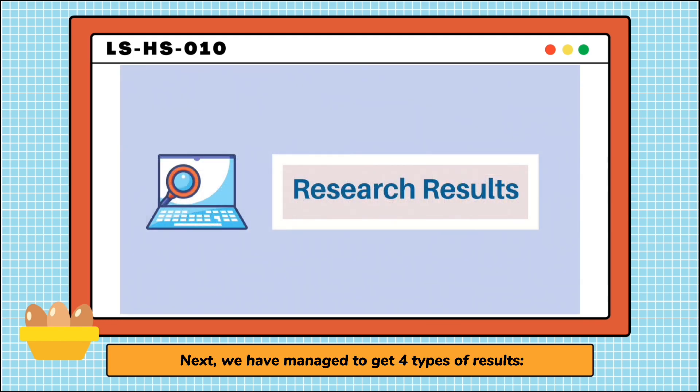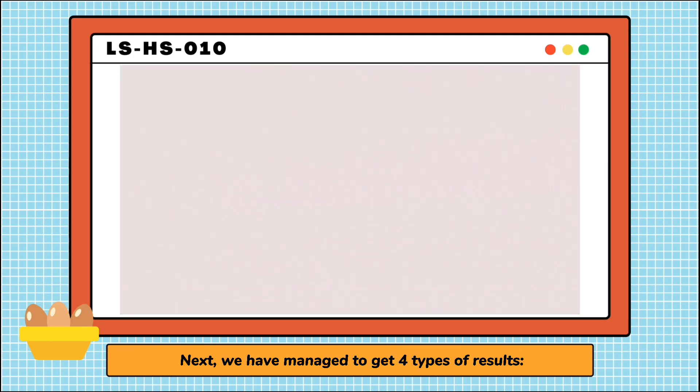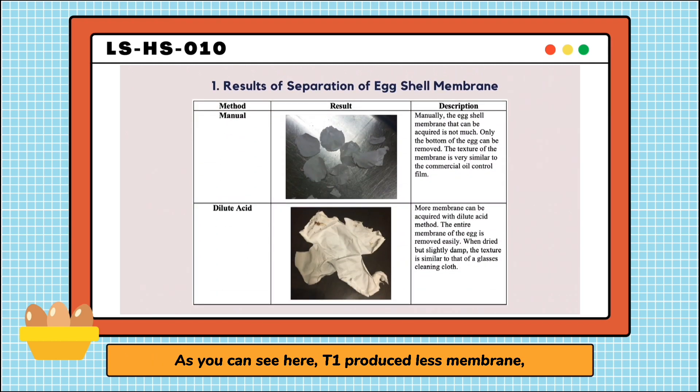Next, we have managed to get four types of results. The first one is the result of separation of eggshell membrane. As you can see here, T1 produced less membrane, whereas in T2, we are able to acquire the whole egg membrane. The texture of T1 is similar to a commercial oil control film where T2 feels like a glasses cleaning cloth.